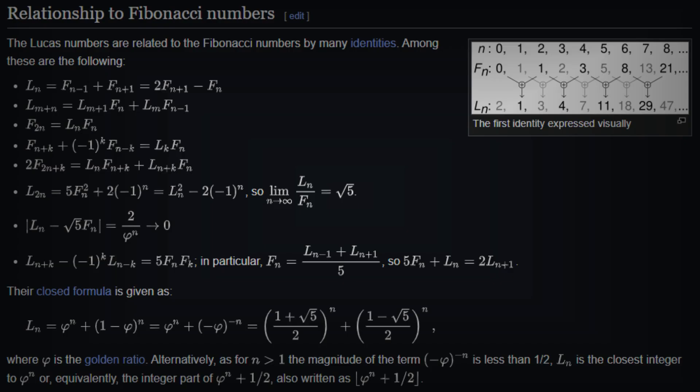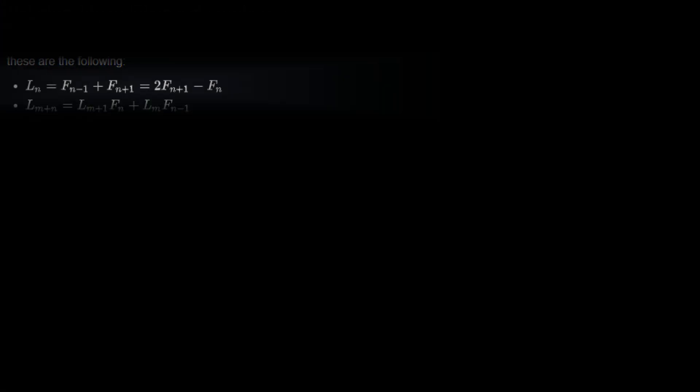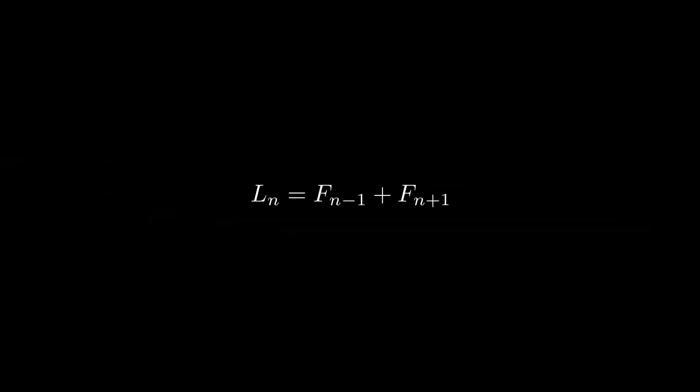Most of the identities here are useless to us, but there are four equations that caught my eye. The first identity states that the nth Lucas number Ln is the sum of the previous and next Fibonacci numbers, which is equivalent to twice the next Fibonacci number minus the nth Fibonacci number. By rearranging this equation, we can solve for the next Fibonacci number by taking the average of the current Fibonacci and Lucas numbers. Likewise, we can use another identity to perform a similar calculation to retrieve the next Lucas number.